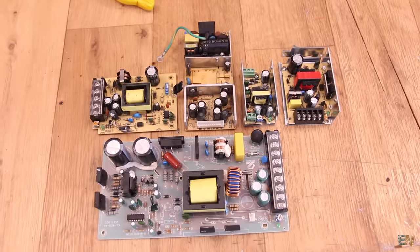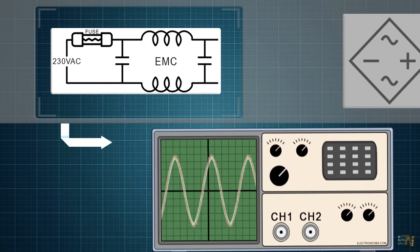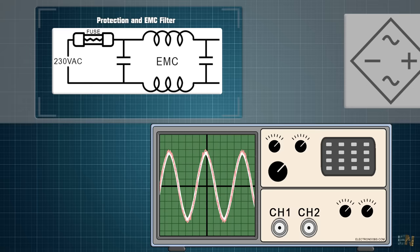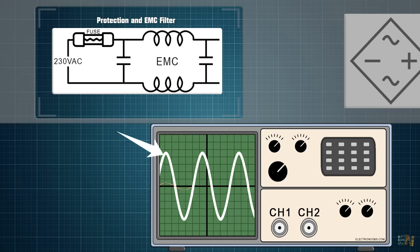So let's see the entire process once again but all together. Ok, so the first block will receive the alternating high voltage and protect the circuit with a fuse. Using the EMC filter, we get rid of the high frequency noise and get a clean sine wave.